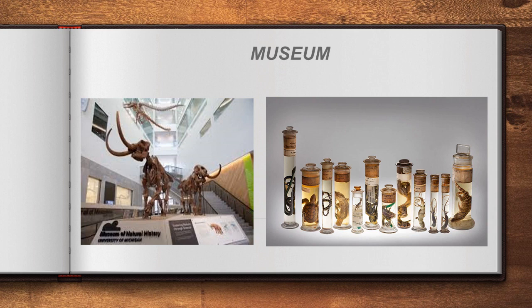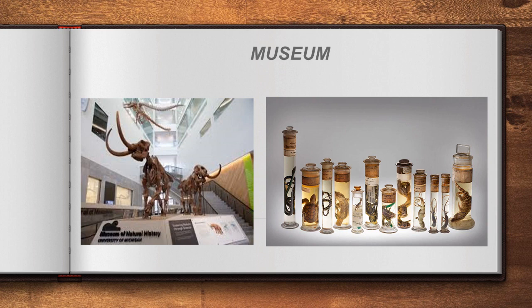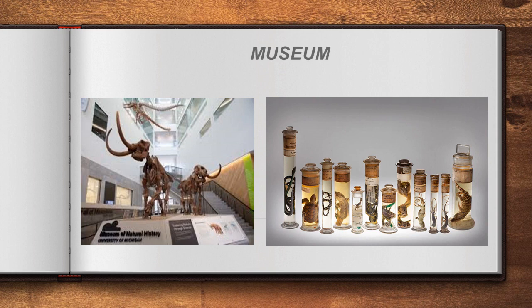A museum is a collection of preserved plants and animals, including both extinct and living organisms in preserved condition. If a researcher wants to study the character of a particular animal, they can go to the museum and closely observe its morphology. For example, you can closely observe a preserved snake that you could not safely approach in its natural environment.